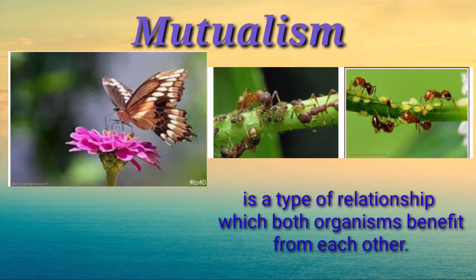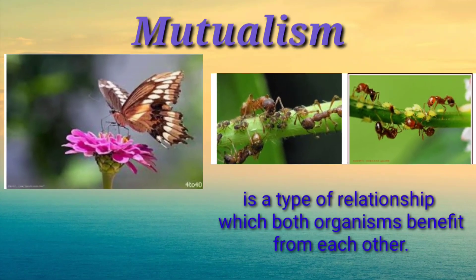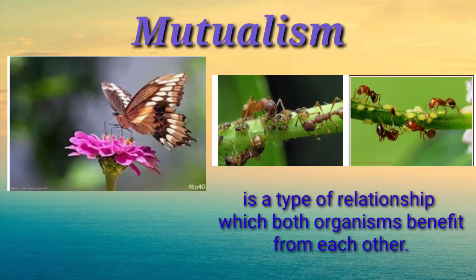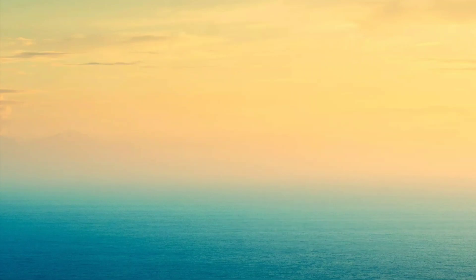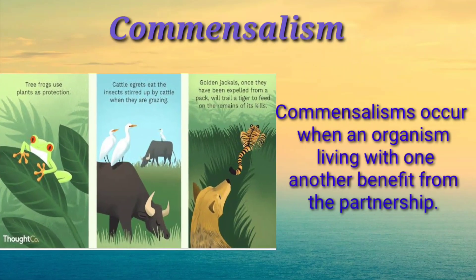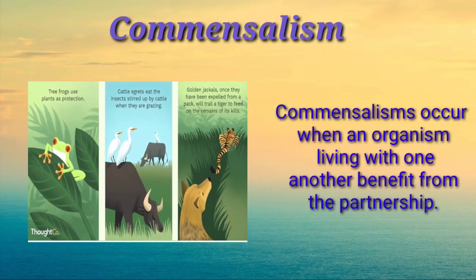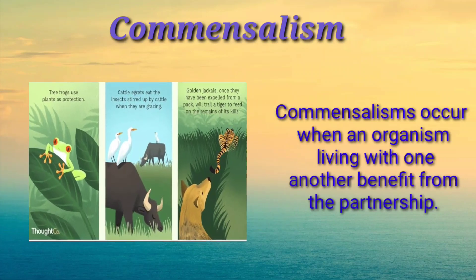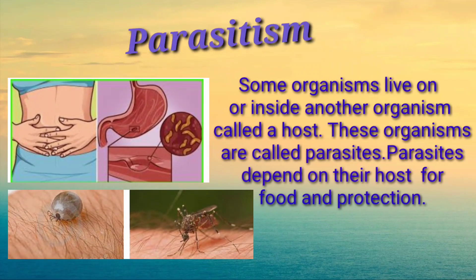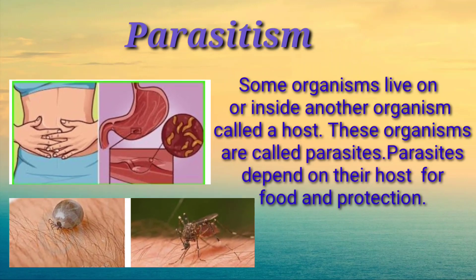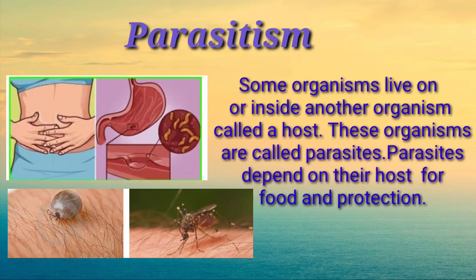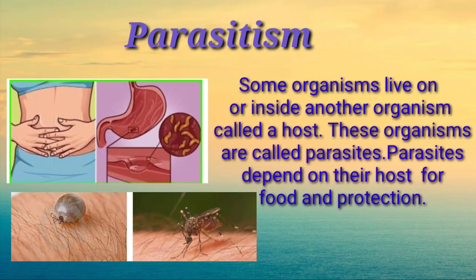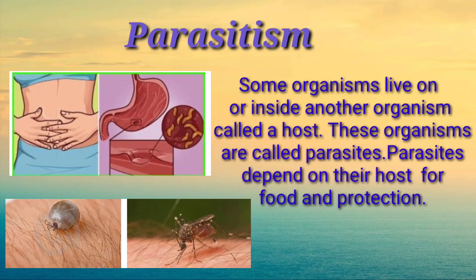Another type of relationship in an ecosystem is mutualism — a relationship in which both organisms benefit from each other. Another one is commensalism, which occurs when one organism living with another benefits from the partnership. Some organisms live on or inside another organism called a host; these organisms are called parasites, and they depend on their host for food and protection.